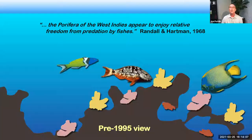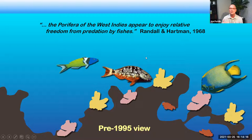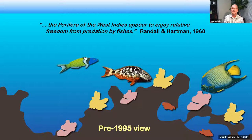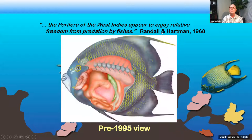When I started working on this 30 years ago, the prevailing view was that top-down effects on sponge communities were not significant — that the kinds of fishes that might feed on sponges essentially ate little bits of sponge from many different species, and their combined impact was relatively minor. This work came from work done by Jack Randall, a very famous ichthyologist, and Willard Hartman, a very famous sponge biologist.